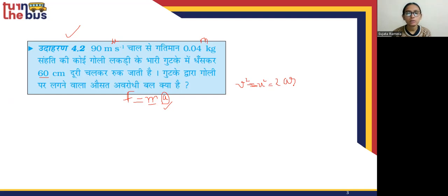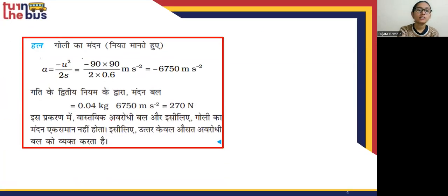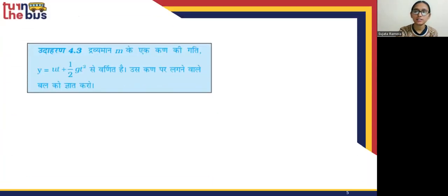The initial value is the starting value, so we need to take the distance and find acceleration using a = (v² - u²) / 2s. The u² value is given, but it is in centimeters so we have to convert it. Solving this gives us approximately -6,750 m/s². Then, multiplying by mass, we get a force of 270 Newtons.